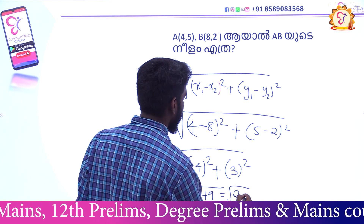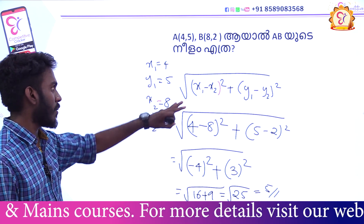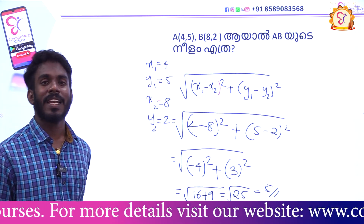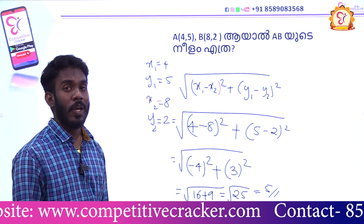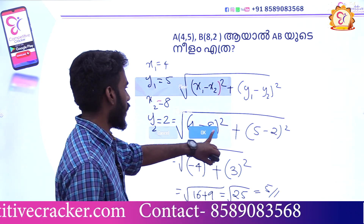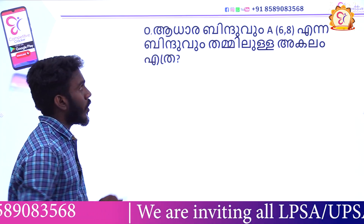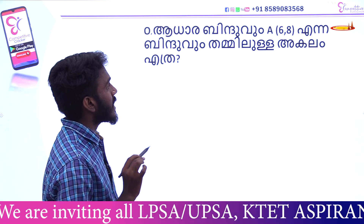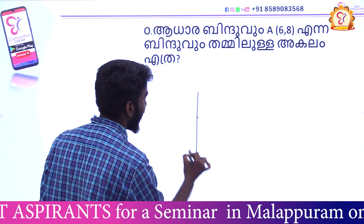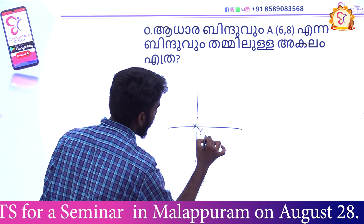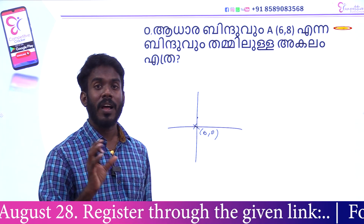So the root of 4 minus 8 the whole square plus 5 minus 2 the whole square equals the root of 16 plus 9, which is the root of 25, equal to 5.